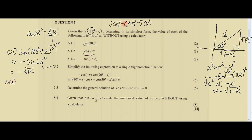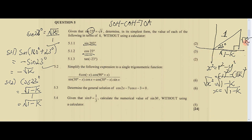For cos 23°, applying SOHCAHTOA, cosine is adjacent over hypotenuse. Our adjacent side is √(1−k) and the hypotenuse is 1, so cos 23° = √(1−k)/1 = √(1−k). That's three marks. Remember it's crucial that you draw that right-angle triangle diagram because sometimes marks are allocated for it.